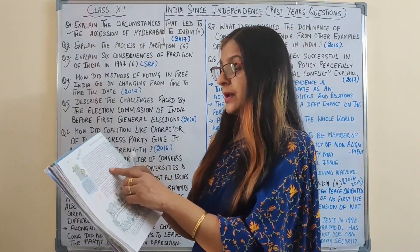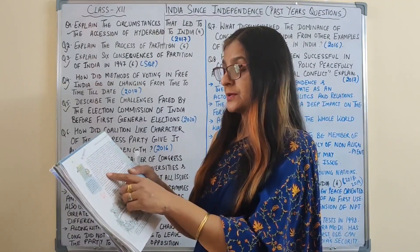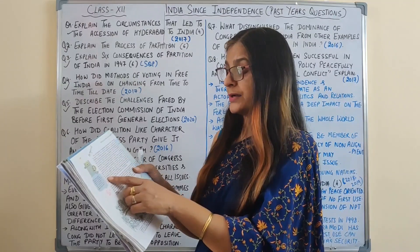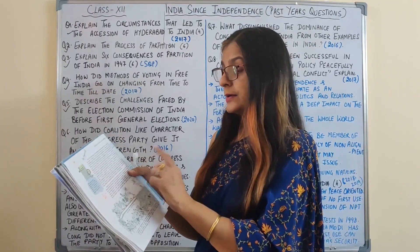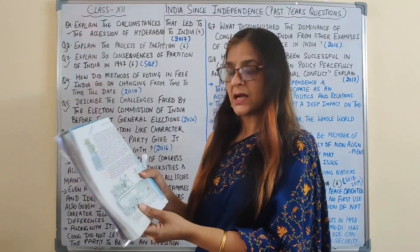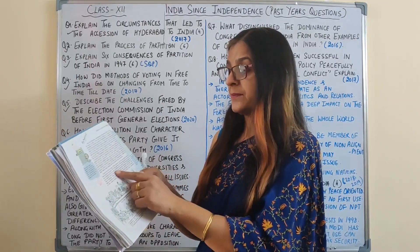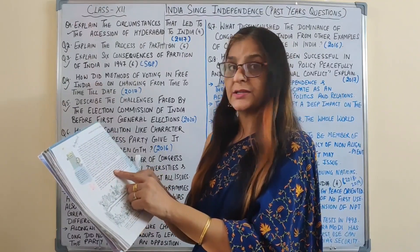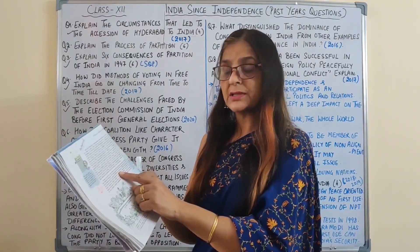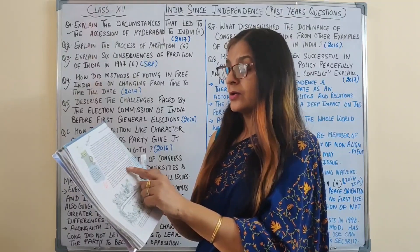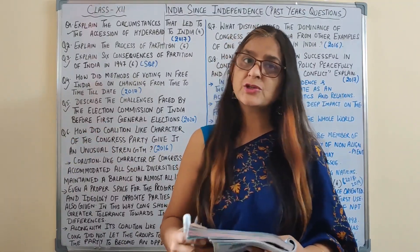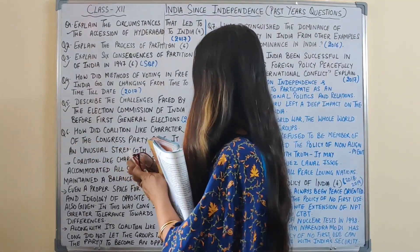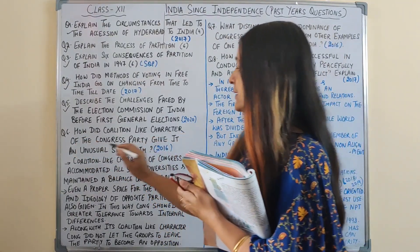At that time there were 17 crore eligible voters who had to elect about 3,200 MLAs and 489 members of the Lok Sabha. The first general election was also the first big test of democracy in a poor and illiterate country — both factors made it very difficult to conduct the elections.